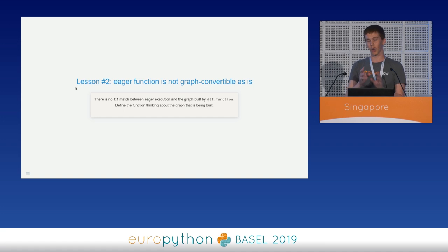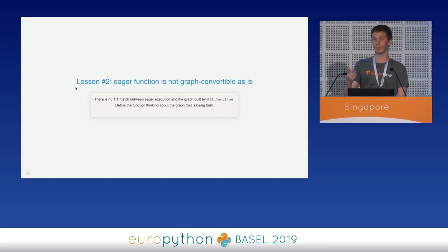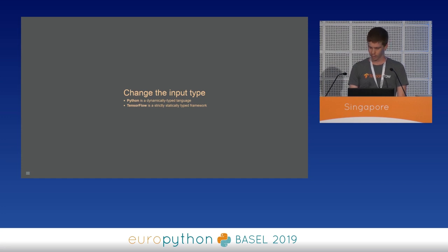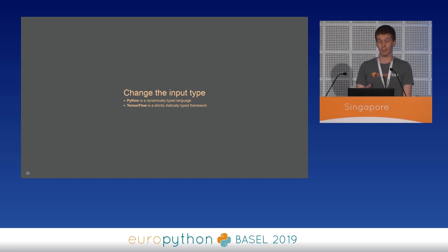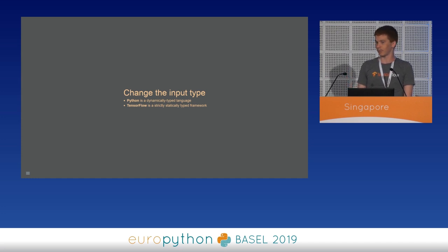This was the first topic of our analysis of TF function. Now we can move forward and analyze what happens when the input type of a TF-decorated function changes. This part of the talk is perhaps the most important, since TF function should bridge two completely different worlds. Python is a dynamically typed language where a function can accept any input type, while TensorFlow, being a C++ library under the hood, is a strictly statically typed library. Every node in the graph must have a well-defined type and shape.